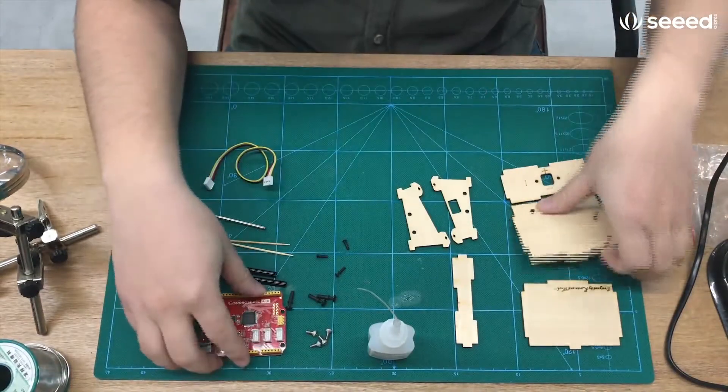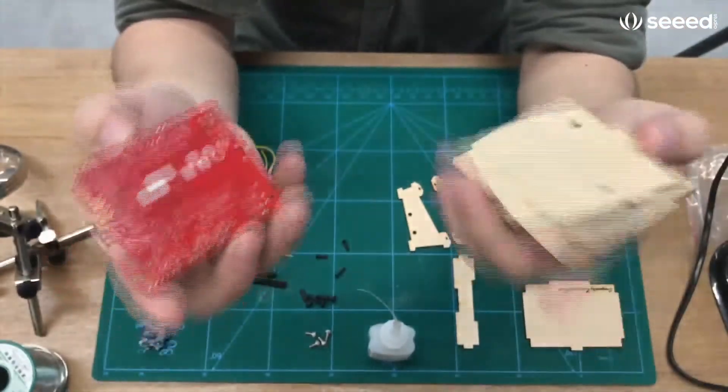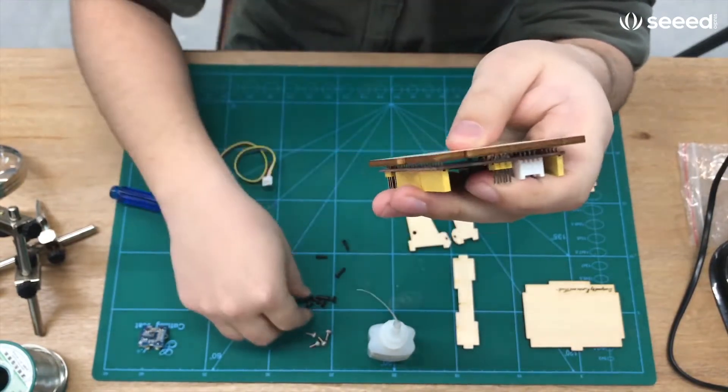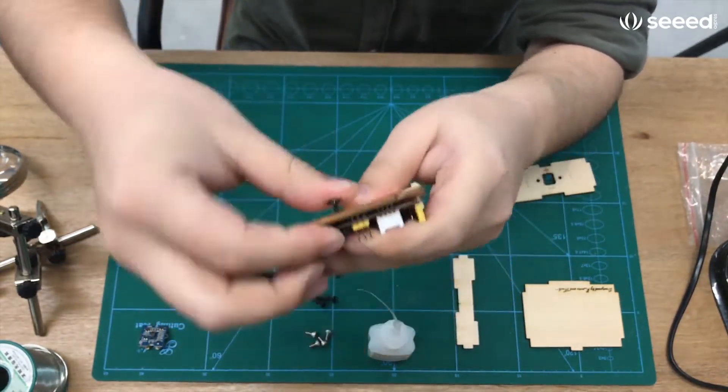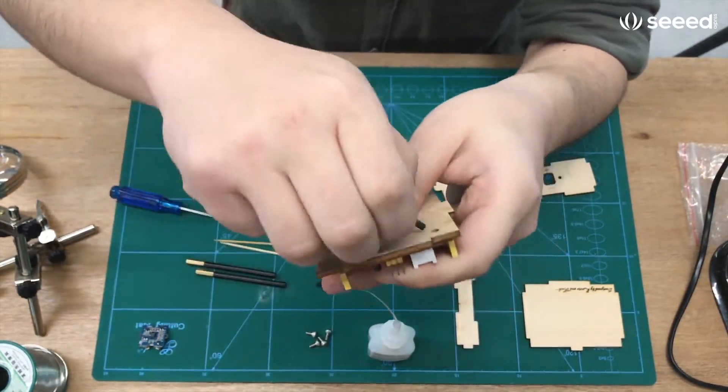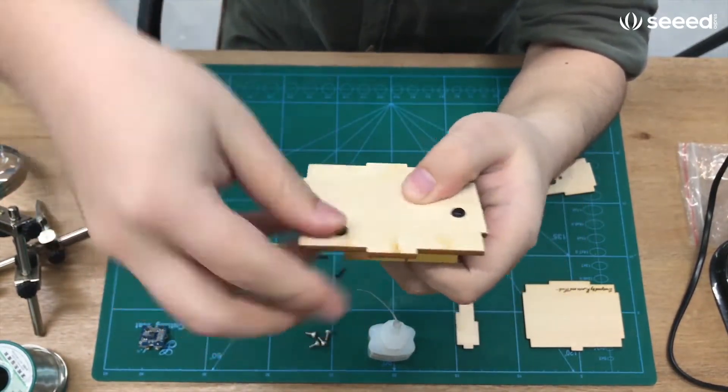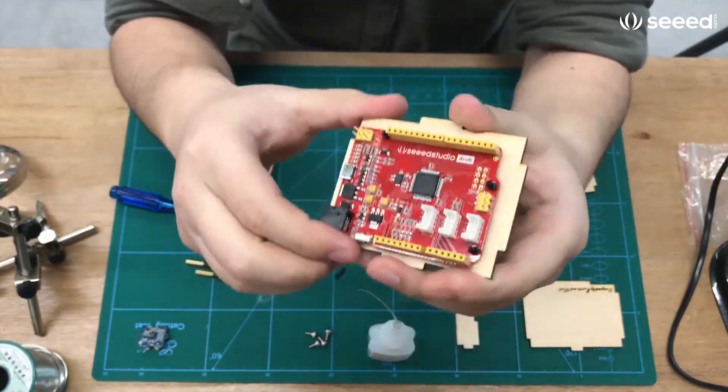Now let's do the assembly. First, we're going to secure the arch on the baseboard. Go ahead and line up the holes. Then we'll grab our M3 rivets and push them through. This is usually very easy to do. There we go. Nice and secure. Not going anywhere.